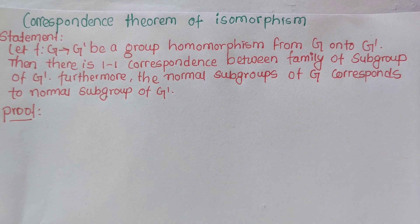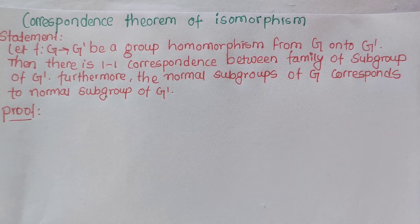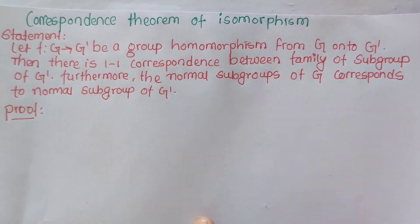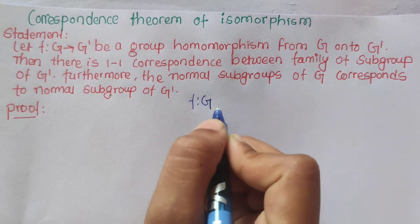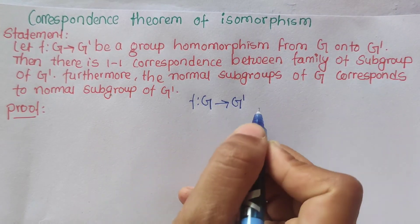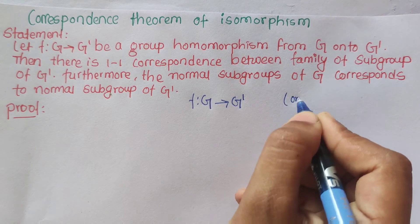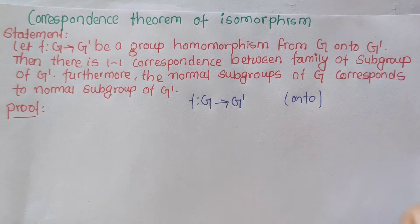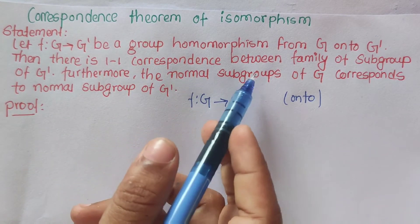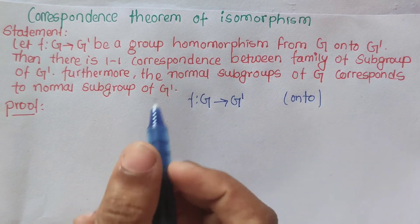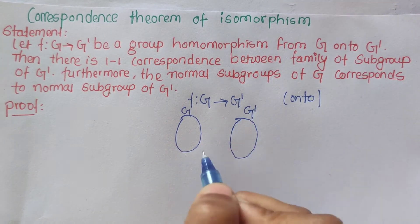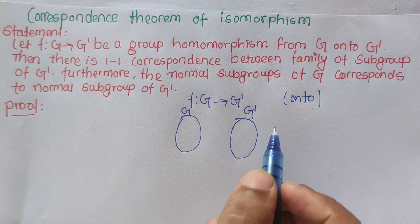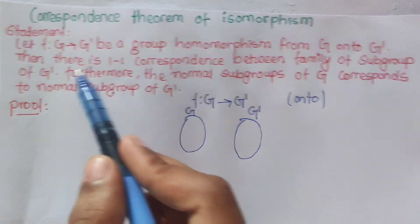Hello everyone. We will discuss the next theorem about Group Homomorphism, that is the Correspondence Theorem of Isomorphism. Statement: Let f: G → G' be a group homomorphism from G onto G' (an onto mapping). Then there is a 1-to-1 correspondence between subgroups of G and subgroups of G'.